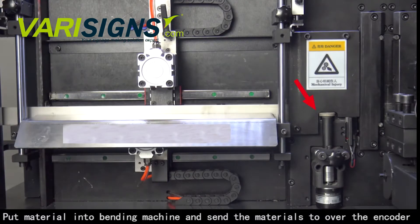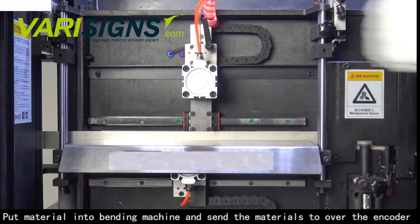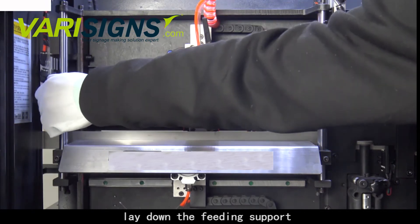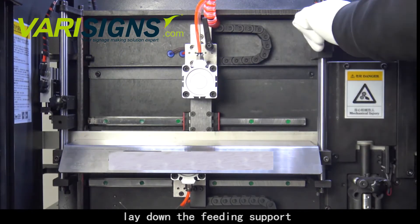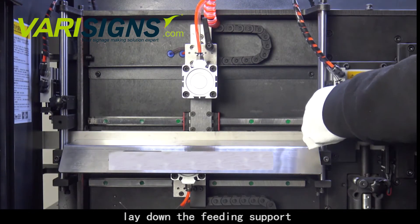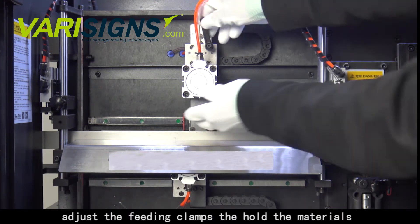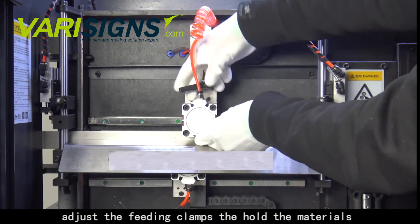Put material into bending machine and send the materials over the encoder. Lay down the feeding support. Adjust the feeding clamps to hold the materials.